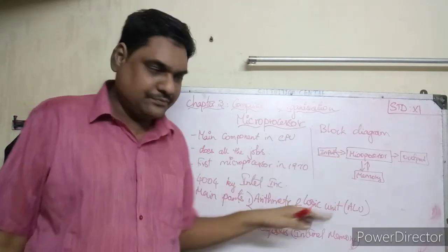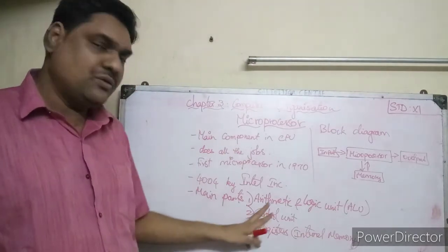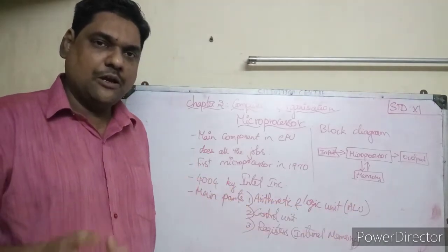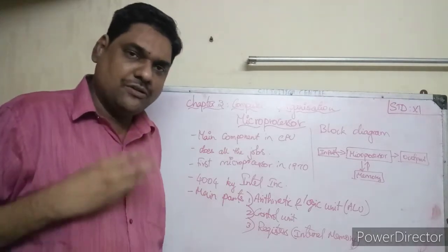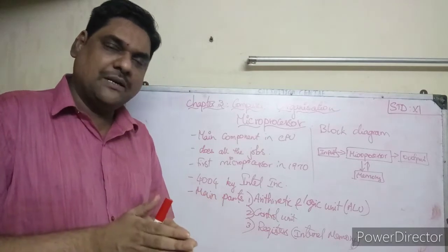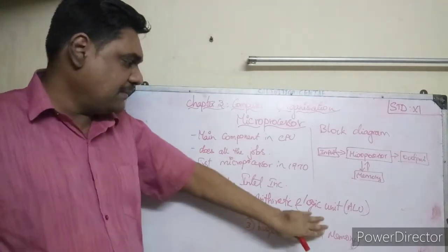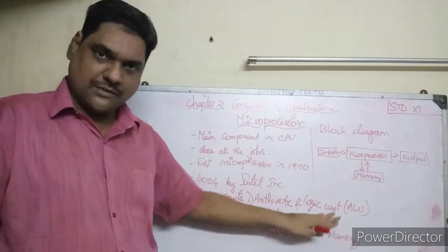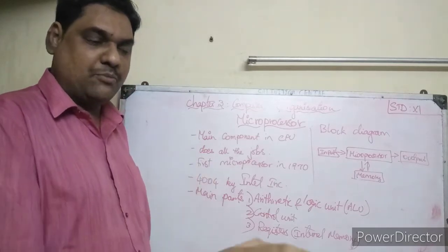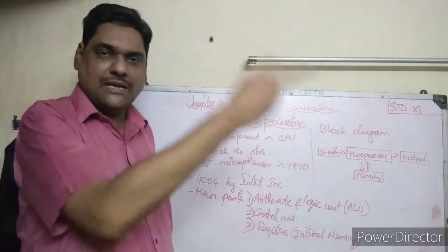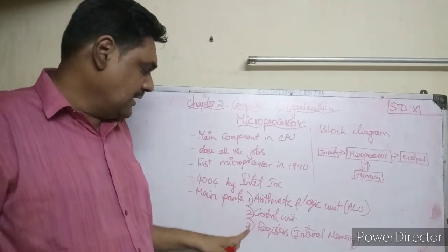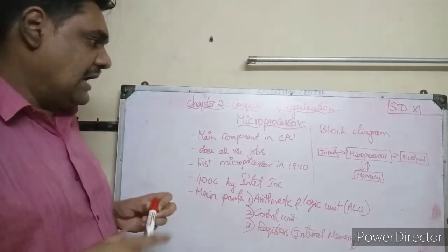Inside the microprocessor, the main parts are: first, the Arithmetic and Logic Unit, in short called ALU. The ALU performs arithmetic calculations and logical operations. The second main part is the Control Unit, which controls the entire computer — managing output to memory, screen display, and all operations.